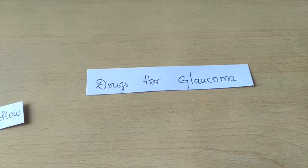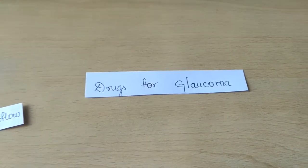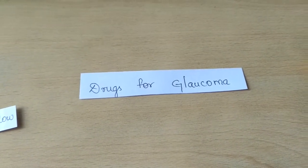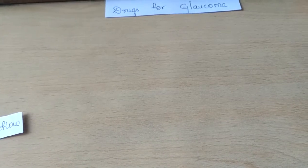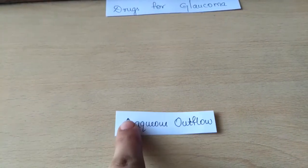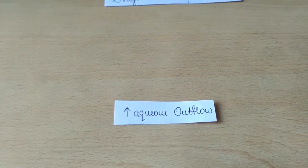Hello friends. In today's video we will cover the second part of the classification for drugs for glaucoma. In the first part we covered the drugs which act by decreasing aqueous secretion. In this part we are going to see the drugs which increase aqueous outflow.